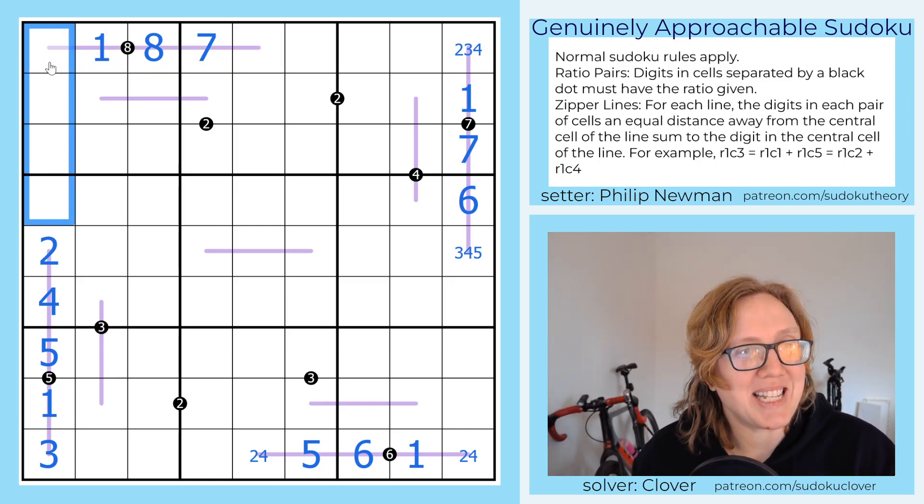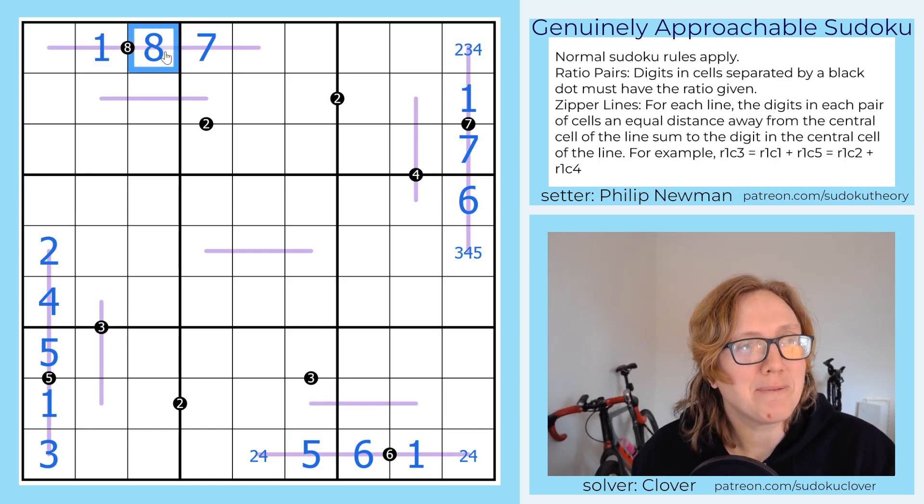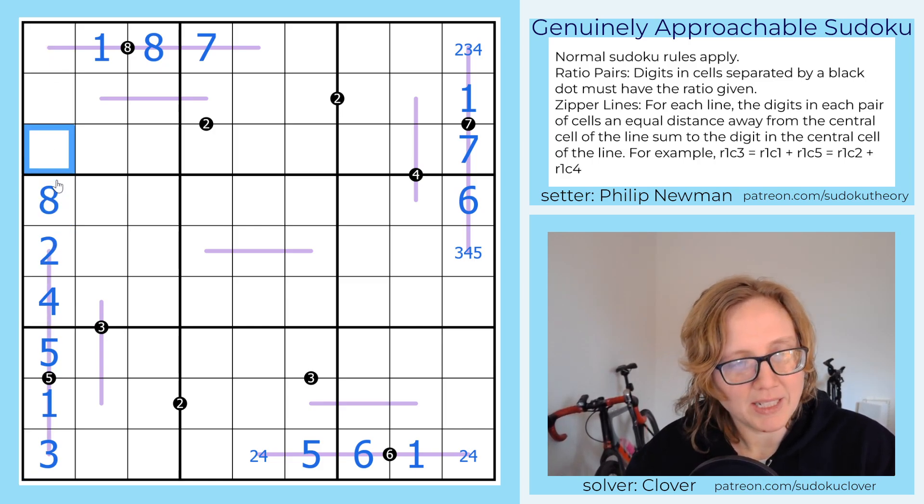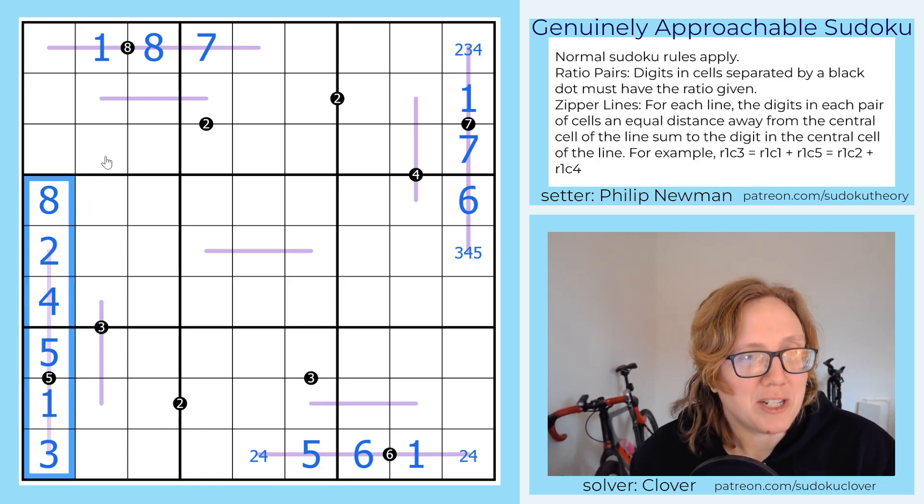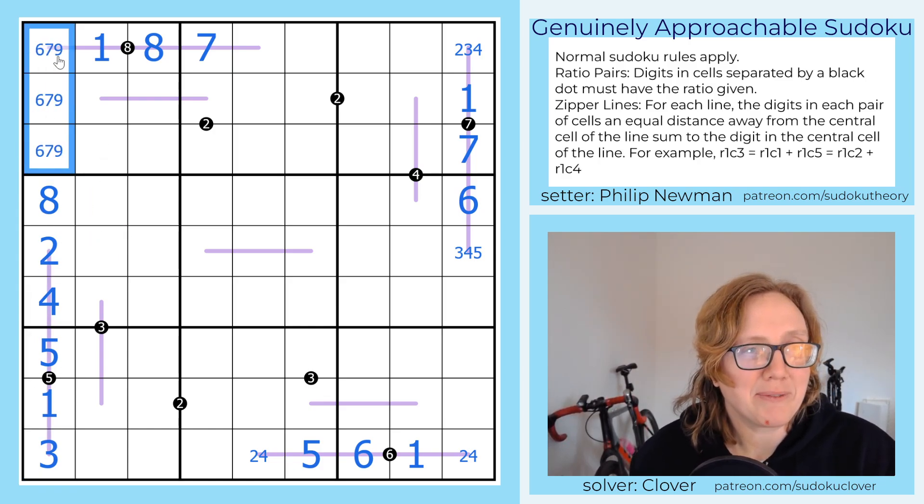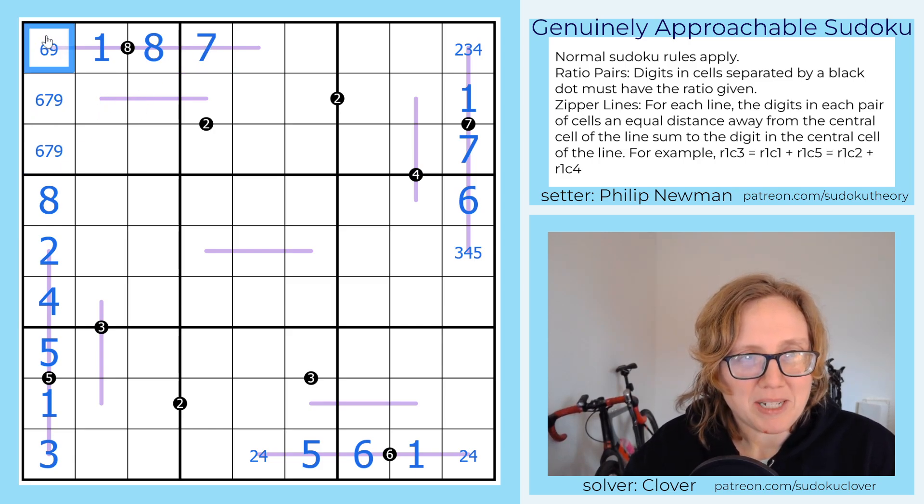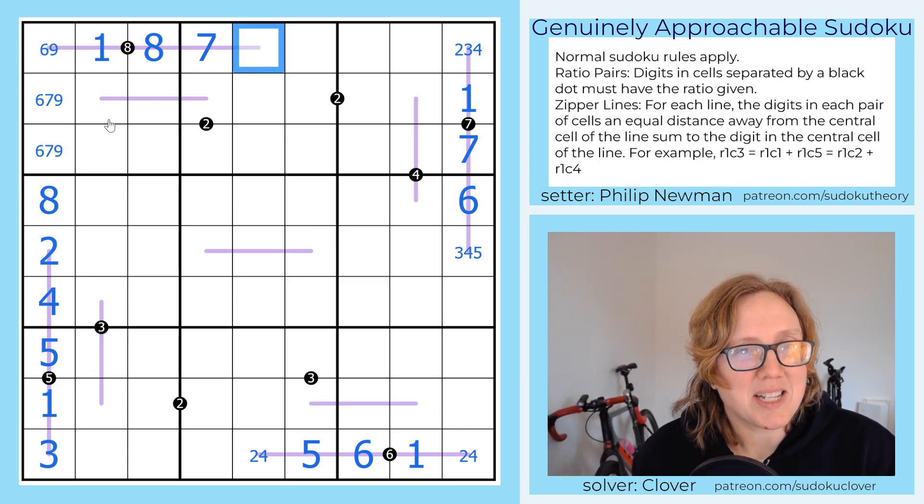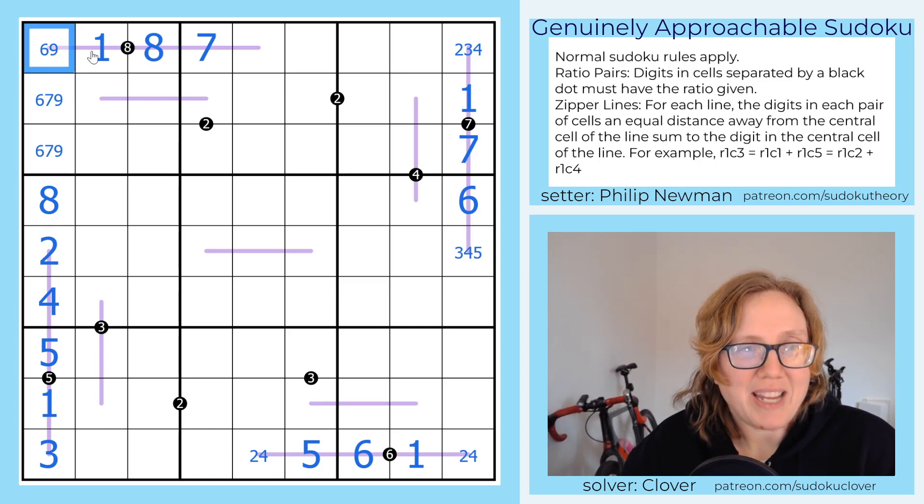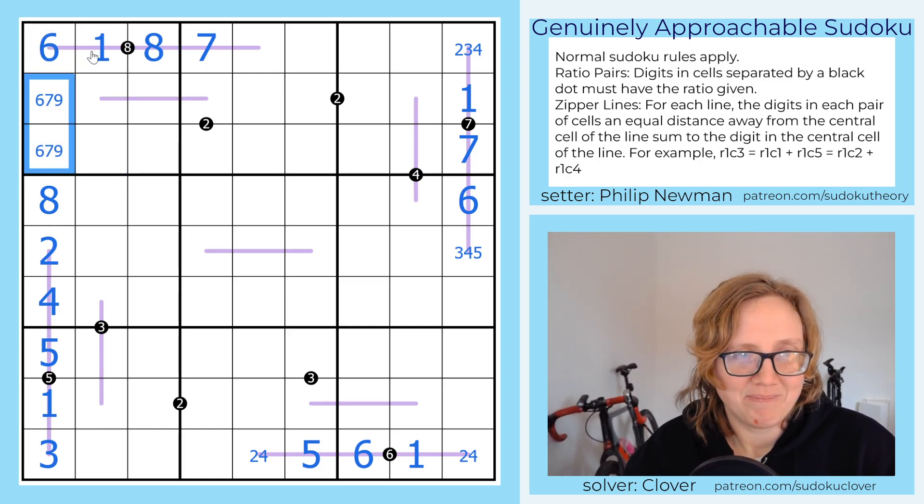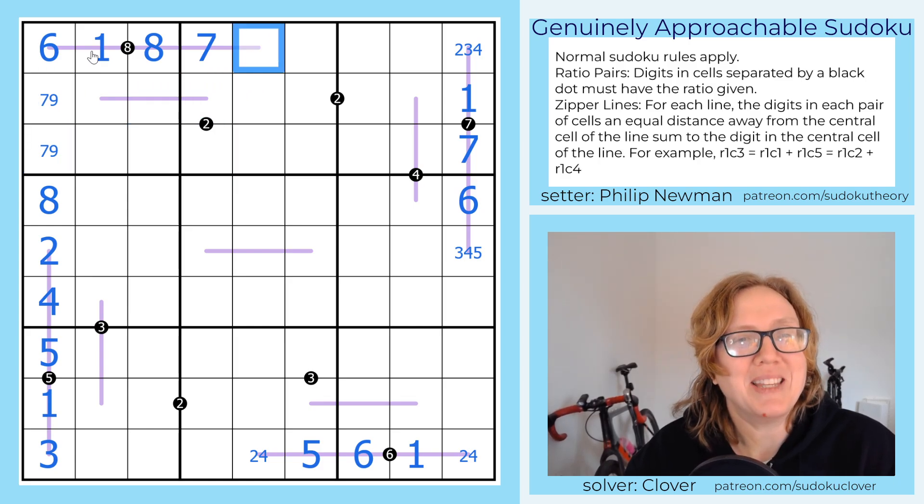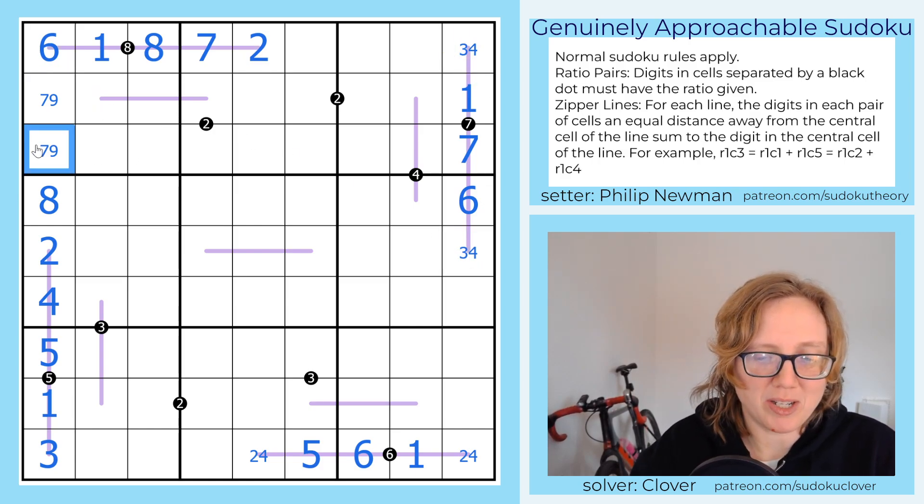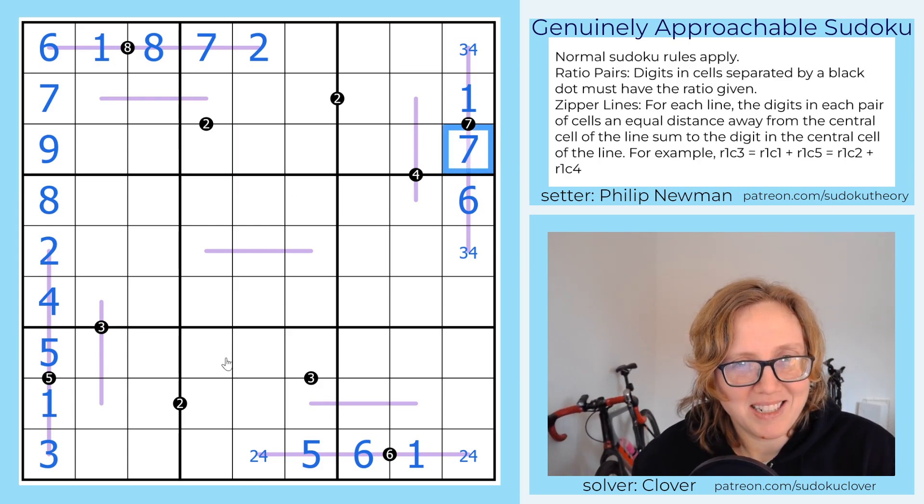So I just noticed the interaction between this and the zipper line. So first of all, 8 in column 1, can't go in those cells, can't go here, so it goes here. So we've used basically all of our low digits here. The only digits we have remaining are 6, 7, and 9 for these three cells. This can't be a 7 by Sudoku, and really the kicker here is that that can't be a 9 either, because 9 can't sum with another Sudoku digit to make a central digit of 8. That has to be 6.